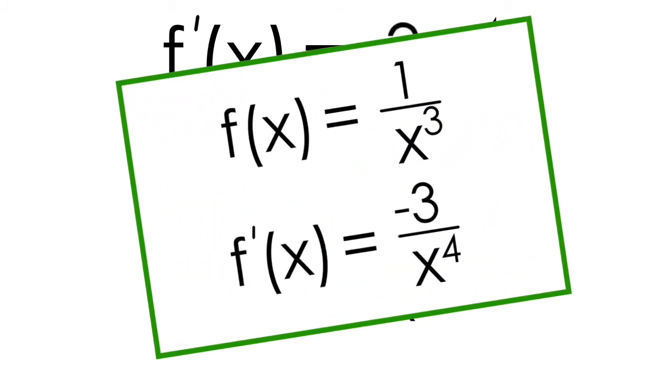So to summarize, our function 1/x³ has a derivative of -3/x^4.